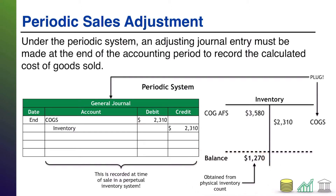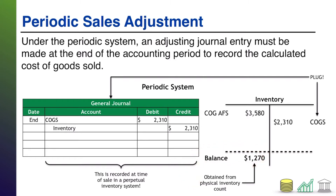People go out to the warehouses, the sales floors, the trucks. You count everything that's there, you input it into the system, the system matches up what you counted with what its value is — what it's worth. And the system will determine the dollar value of that ending balance that you physically counted as part of your physical inventory count.